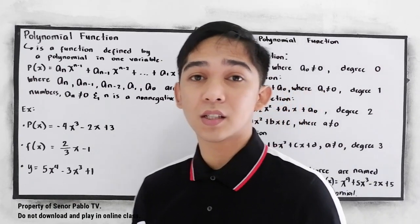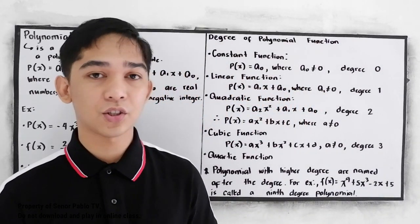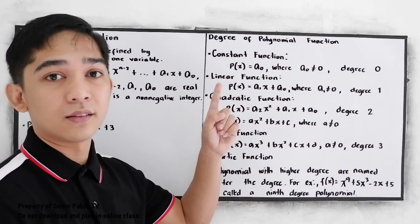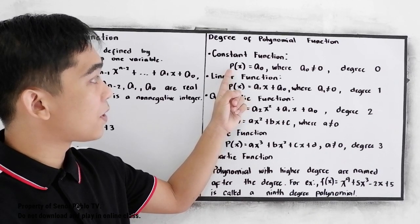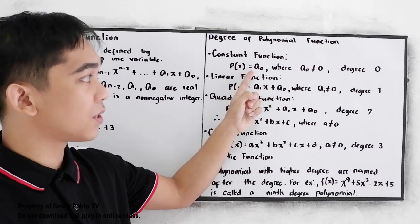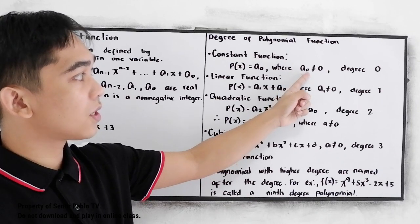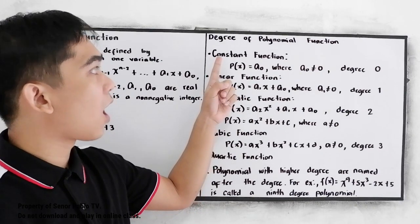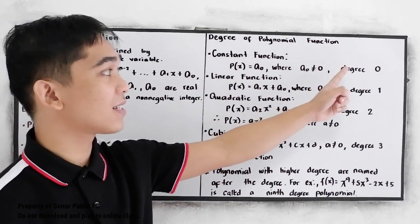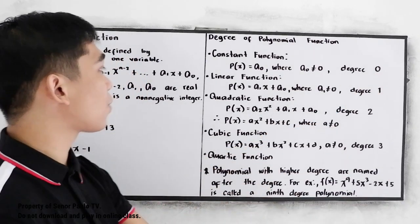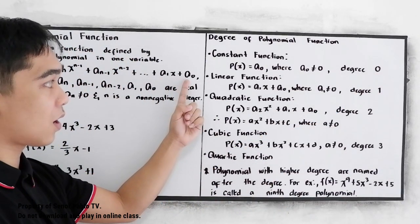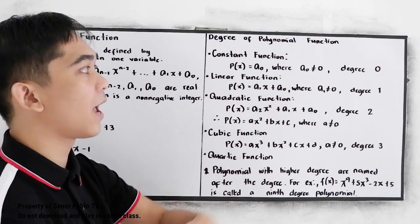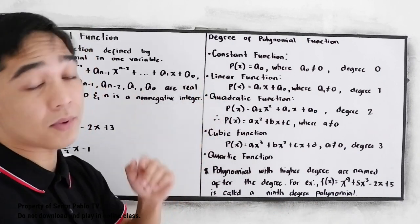Now let's have a short review about the degree of polynomial functions. We have the constant function: p(x) = a-sub-0, where a-sub-0 is not equal to 0. A constant function has a degree of 0 — that's why in our polynomial function this is our constant term a-sub-0, and the constant must not be equal to 0.